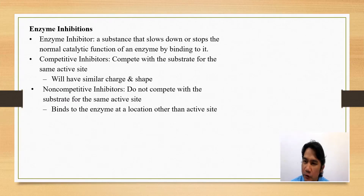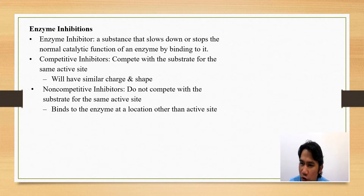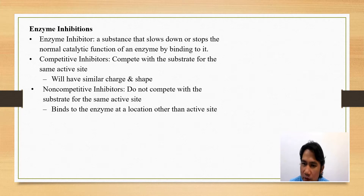Inhibitors are substances that slow down or stop the normal catalytic function of an enzyme. These inhibitors bind to the enzyme, and the binding could be competitive or non-competitive.